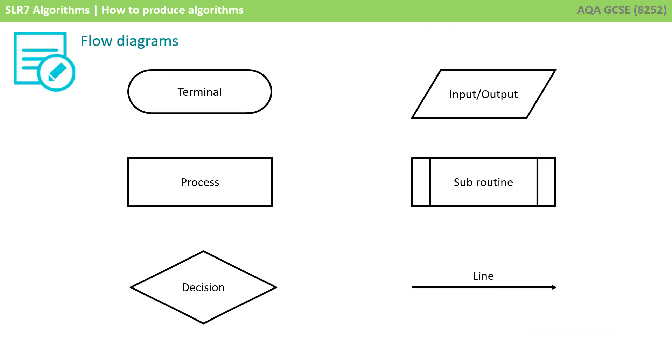So, all flow diagrams use a common set of symbols. There are many symbols, but 6 of the most popular ones that you'll be expected to know for the exams are shown here. You've got a terminal symbol, and that shape represents the start or end of a process. Then you have a process symbol, and this shape represents something being initialized, processed or calculated.